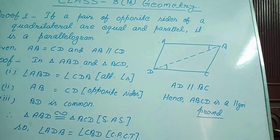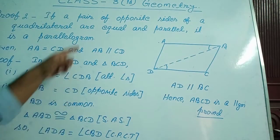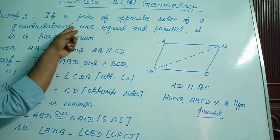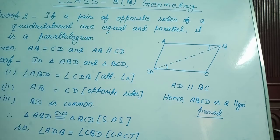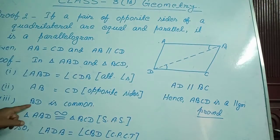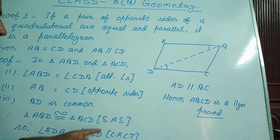Secondly, AB is equal to CD because opposite sides are equal — it is given in the statement. Third condition: BD is a common side for both triangles, so I wrote BD is common. From these three conditions we can say triangle ABD is congruent to triangle BCD from the SAS (side-angle-side) axiom.